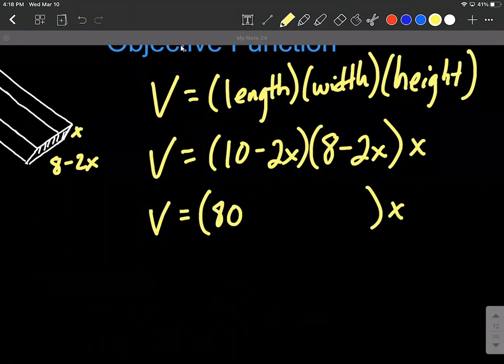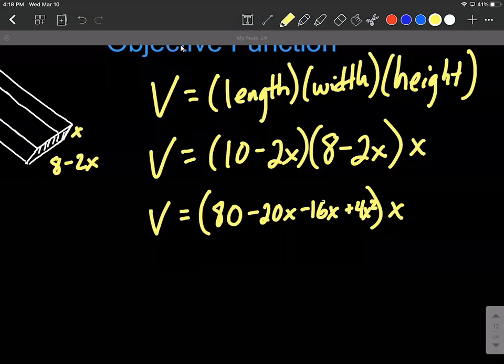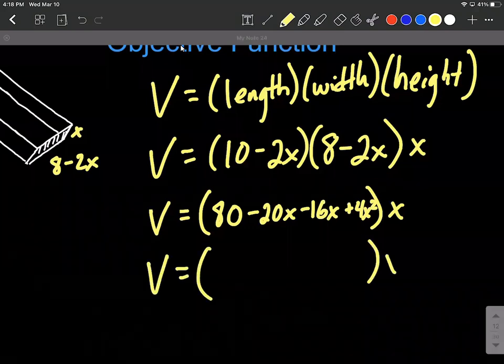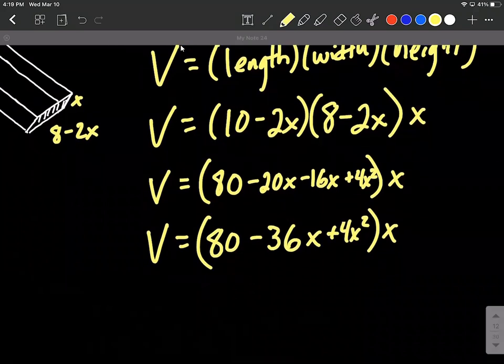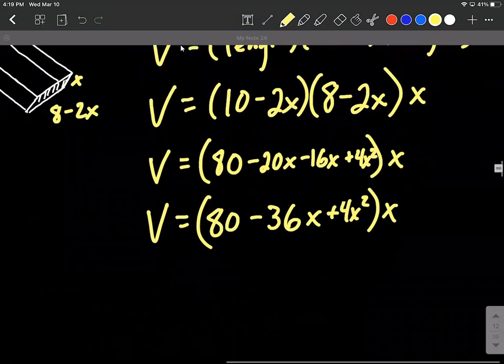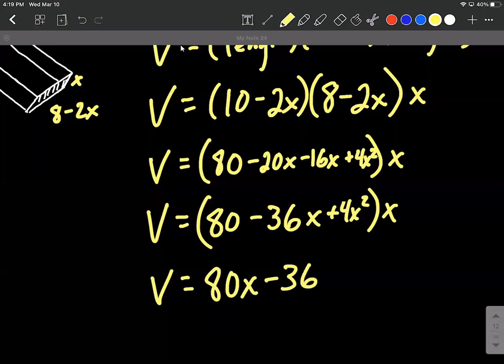We're going to distribute here. So 10 times 8 makes 80. My outer terms, 10 times negative 2x is negative 20x. The inner terms, negative 2x times 8 is minus 16x. And then the last, we have negative 2x times negative 2x makes positive 4x squared. We can combine our like terms, still bringing that x on the outside along. So we can say this is 80 minus 36x plus 4x squared. Now I'm going to go ahead and distribute that x. That way we can get away with just using the power rule. So x times 80 will be 80x minus 36x squared plus 4x to the third power.